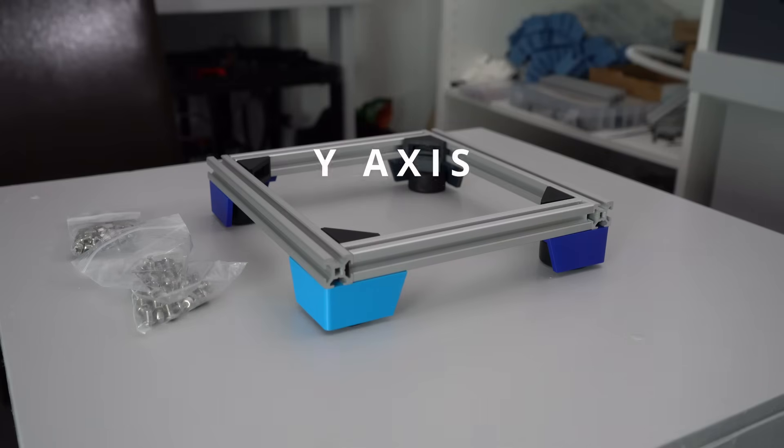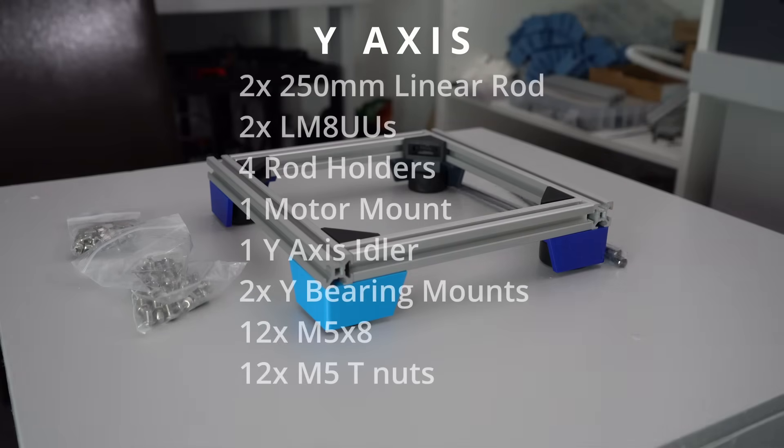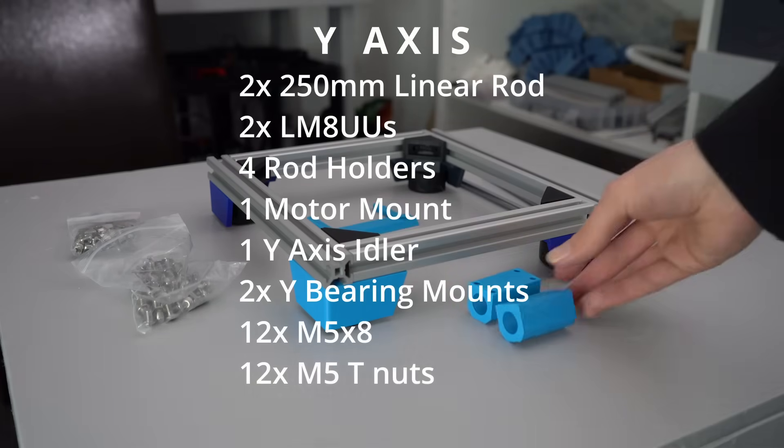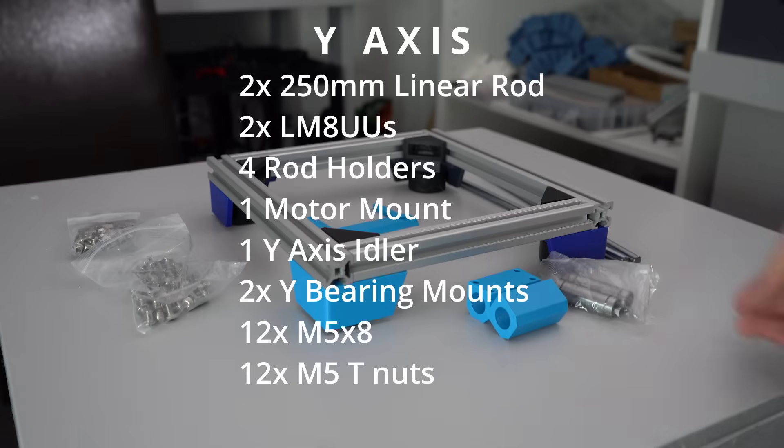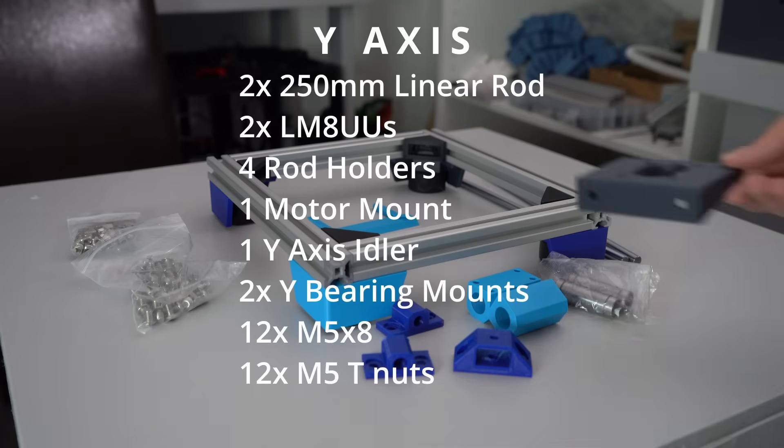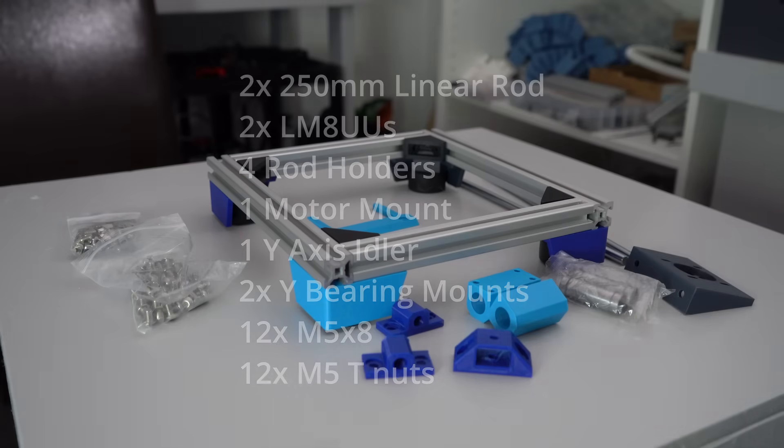To assemble the Y-axis, you will need two 250mm linear rods with bearings, the four printed rod holders, the motor mount, the Y-idler, and also the Y-bearing mounts. You'll also need more M5x8s and T-nuts to attach all of these parts to the frame.